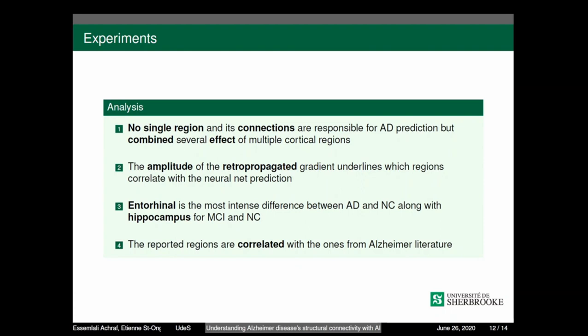For the experiment and our findings, we found that no single region and its connections are responsible for AD prediction, but combined several effects of meta-cortical regions. Also, the amplitude of the retro-propagated gradient underlines which regions correlate with the neural network prediction. Like, entorhinal is the most intense difference between AD and NC, along with hippocampus for MCI and NC. The reported regions are correlated with the ones from the literature and neuroanatomist expert review.